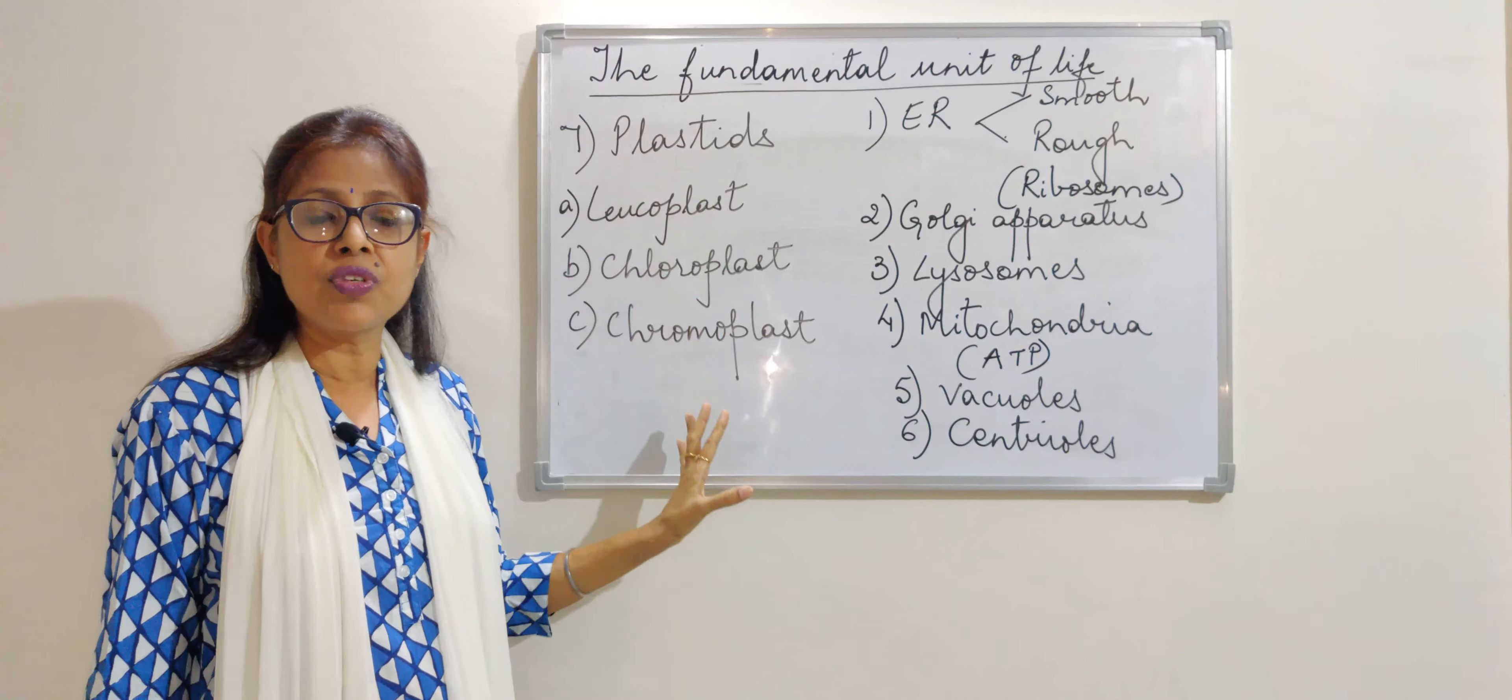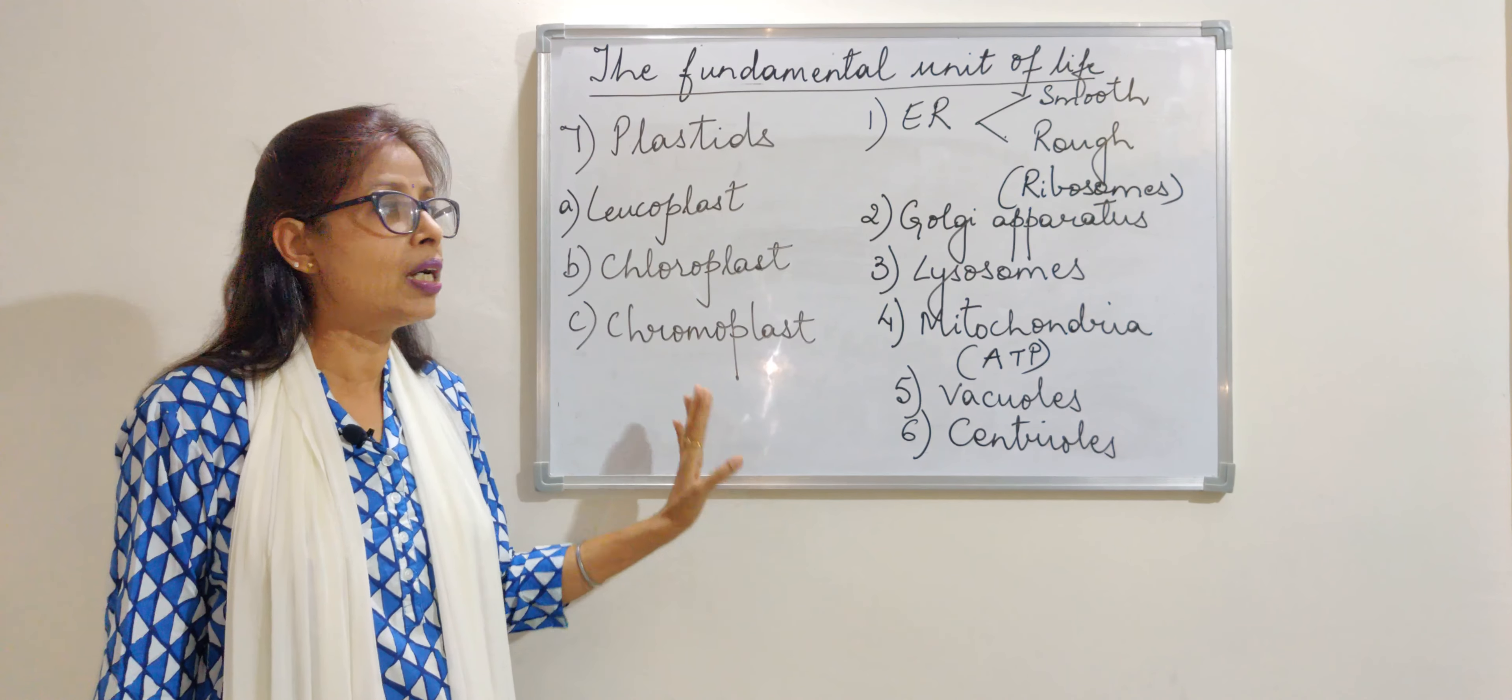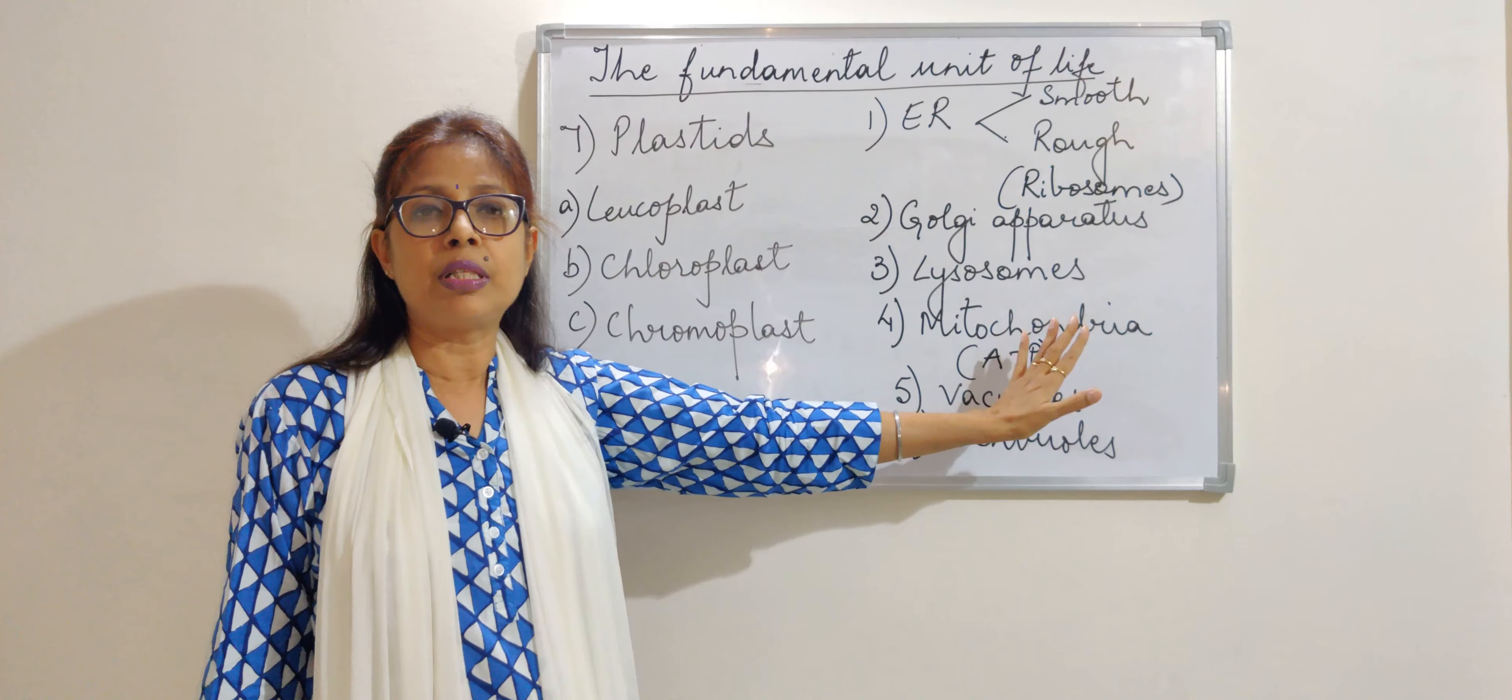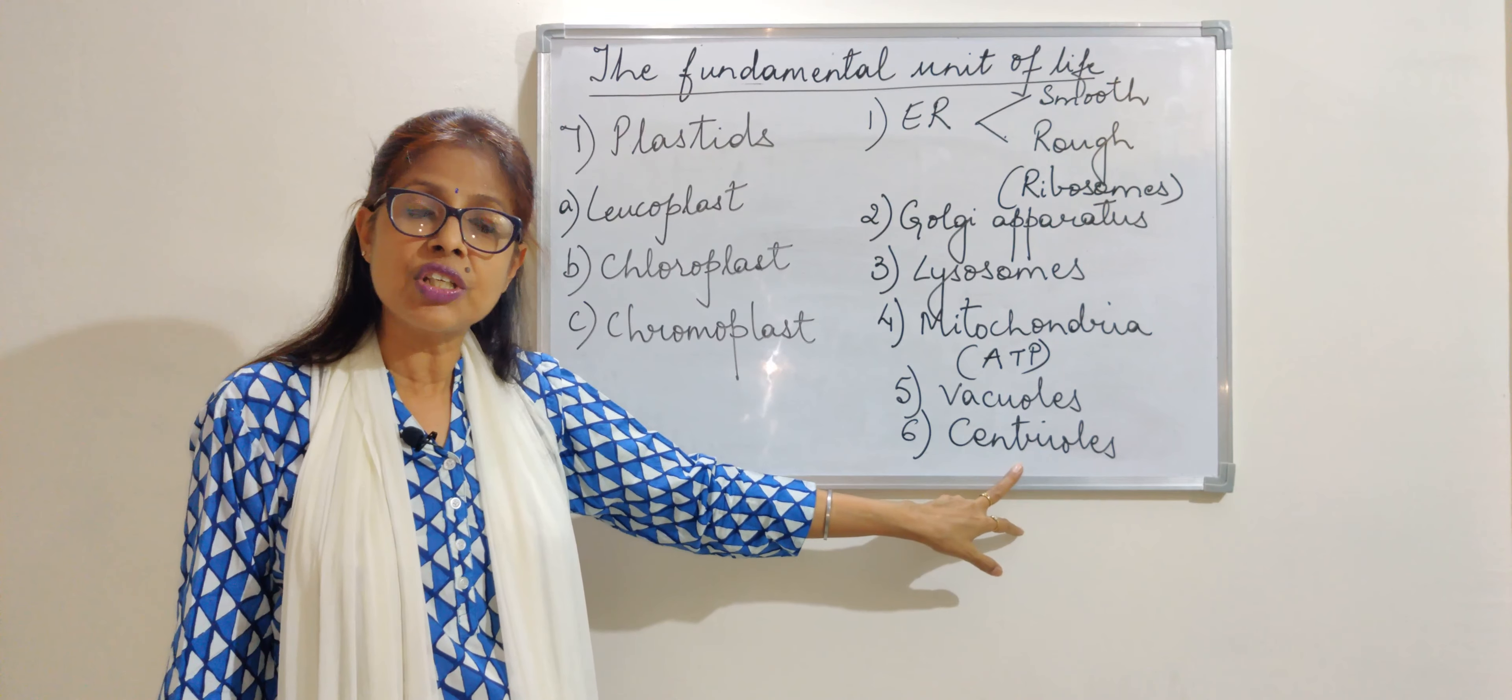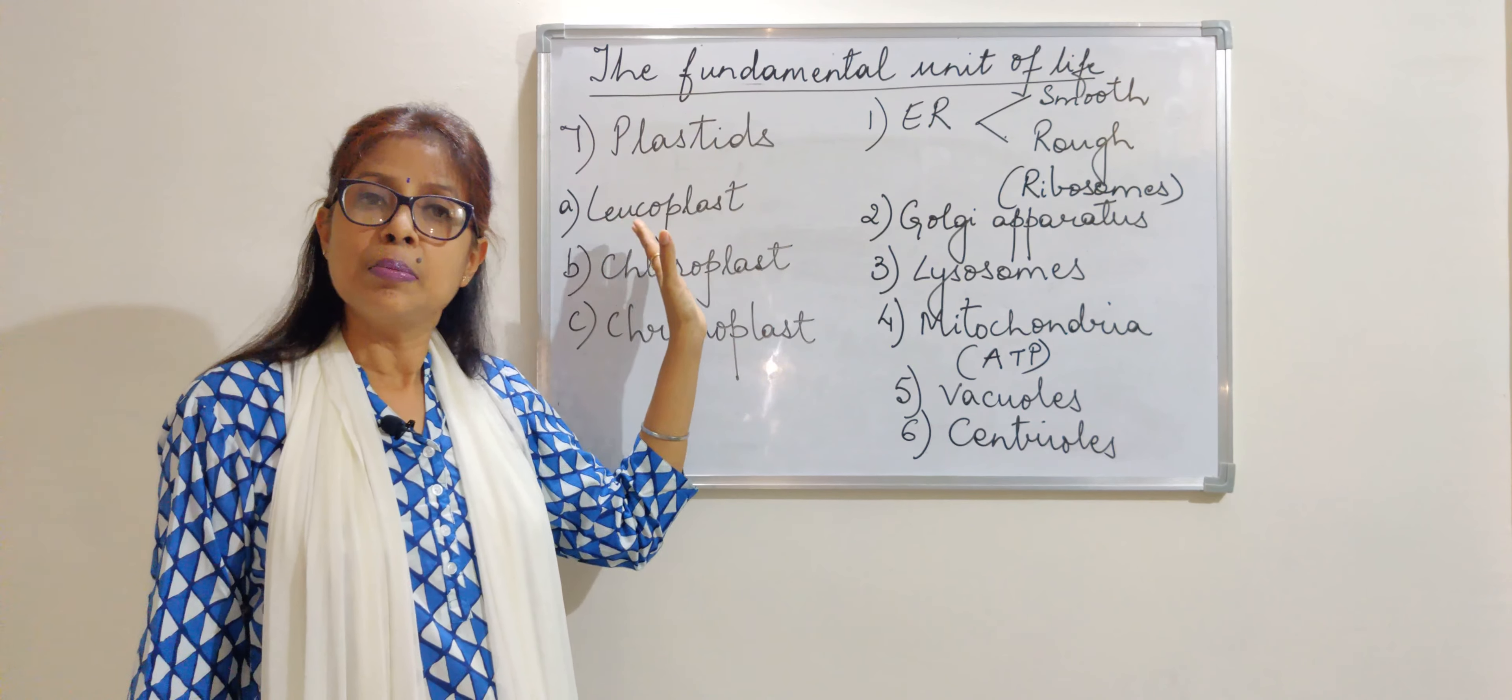So these plastids, which are imparting color to various parts of the plant, are absent in animal cell. And the centrioles, which help in division of cell in animals, is absent in plant cell.